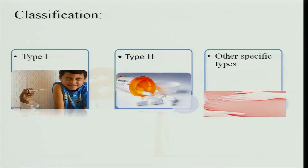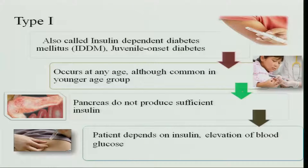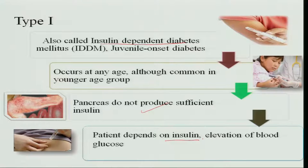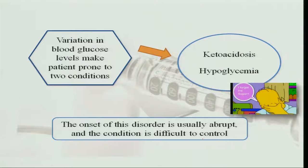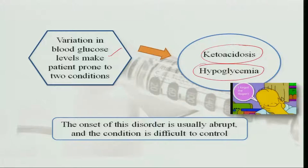Classification can be type 1, type 2, and other specific types. Type 1 diabetes is also called insulin dependent diabetes and it generally occurs in children, so it is called juvenile onset diabetes. The pancreas do not produce sufficient insulin and the patient has to depend on insulin, with always an elevated level of blood glucose. Variation in blood glucose levels makes the patient prone to ketoacidosis, where ketone bodies in the blood increase, or the patient may very quickly go into hypoglycemia where sugar levels drop very low. The onset of this disorder is usually abrupt and the condition is difficult to control.